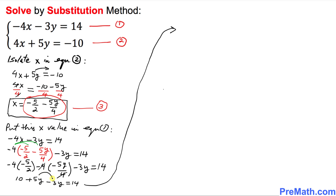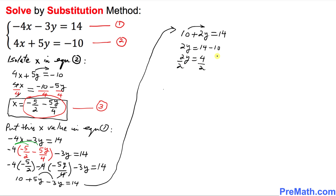We combine like terms: 5 plus 5y minus 3y equals 14, which gives us 10 plus 2y equals 14. Moving 10 to the other side: 2y equals 4. Dividing by 2, y turns out to be equal to 2.